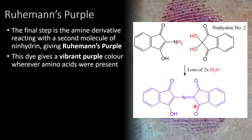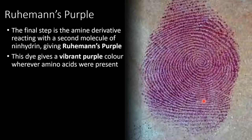This brings us to the final step of the reaction of ninhydrin: that amine derivative reacts with a second equivalent of ninhydrin, resulting in the loss of two molecules of water. We wind up with the final conjugated form of Ruhemann's purple. It comprises one molecule of ninhydrin, one molecule of ninhydrin, and just the amine group derived from the amino acid, all entirely linked together in a conjugated system — giving a vibrant purple color. So wherever amino acid was present, spraying this reagent will produce this bright purple dye. Where there's no amino acid, the ninhydrin simply sits on the surface and is colorless, generating great contrast depending on whether amino acid was present. This is how fingerprints are visualized chemically using ninhydrin.